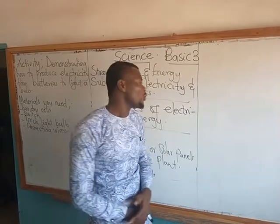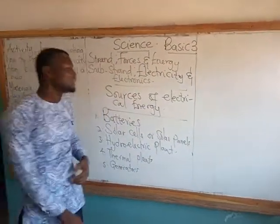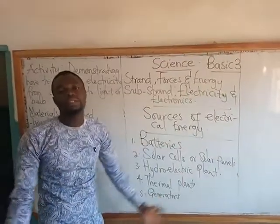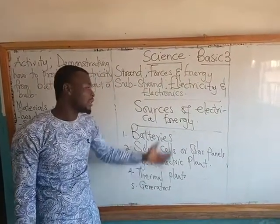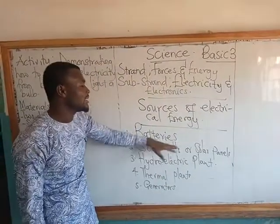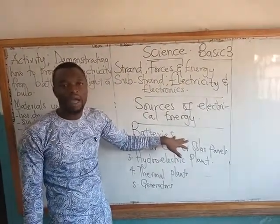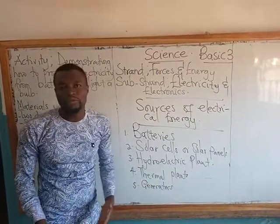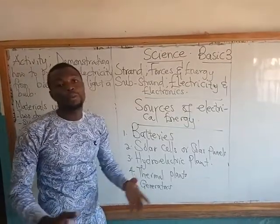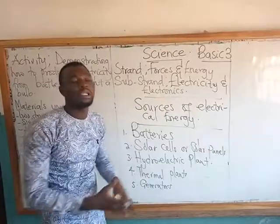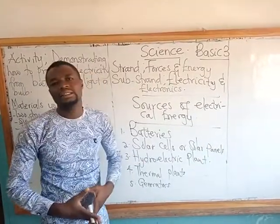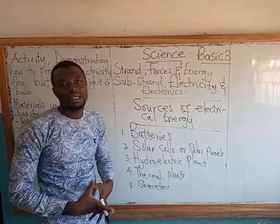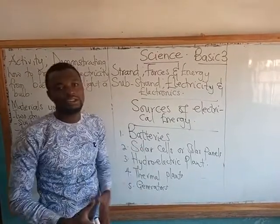So basically we're looking at sources of electrical energy — where do we get electricity from? We can get electricity from batteries. Now there are different kinds of batteries. The most popular of them all is the ones we use in our touch lights and other stuff. We call it the dry cells.